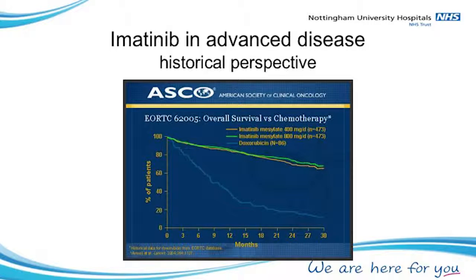The EORTC — the European Organisation for Research and Treatment of Cancer — went back to their huge database, looking for patients diagnosed with GIST or misdiagnosed but actually having a GIST, plotted their survival, and compared it with the trial data. I think you'll agree it is a massive difference, and that's why imatinib got through regulatory hurdles quite quickly.